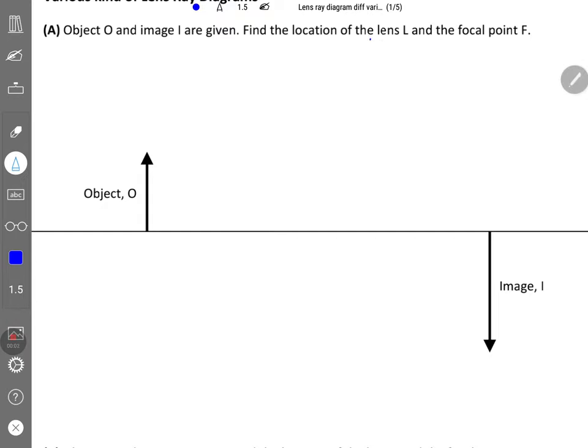You're supposed to find the location of the lens L and also the focal point F when you're given both the object and the sharp image formed. So the first step that you need to do is to join from the tip of the object to the tip of the image with this ray. And as you know, when this ray passes through the principal axis, this point will be the position of the lens, and let's label it as L.